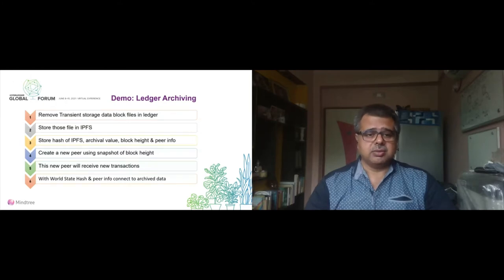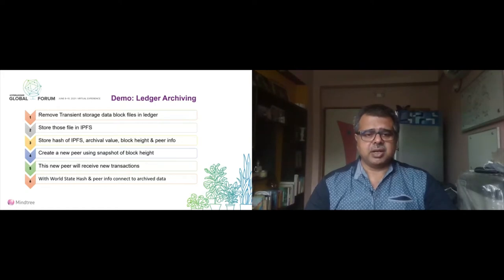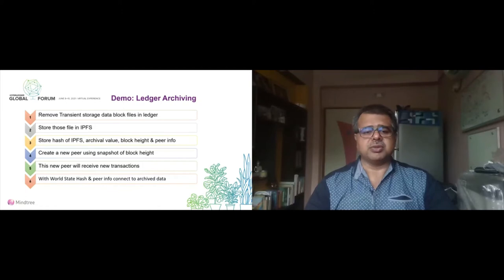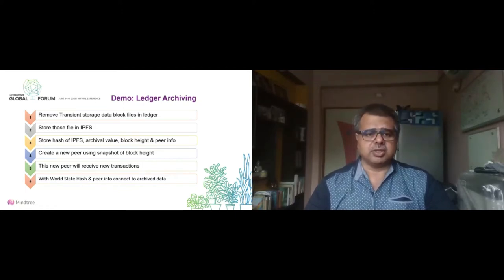First we need to call a chain code method to update the archival level from the current state to the next step. This will also update all the composite keys of the world state and delete the previous composite keys without changing any asset values in the world state. After updating the archival value, we pick up the backup of the ledger data folders and block files and store them in IPFS, which gives us the corresponding hash values.